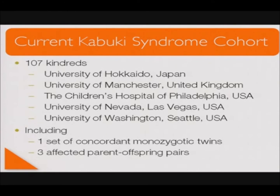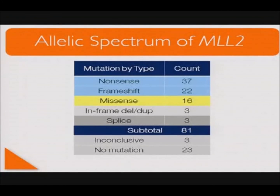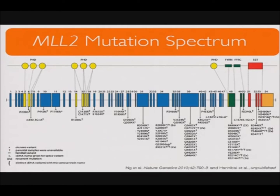Our current cohort includes one set of concordant monozygotic twins and three affected parent-offspring pairs. A summary of the types of heterozygous mutations identified in MLL2 from the cohort is displayed here. This slide shows a diagrammatic representation of where these mutations occurred within the MLL2 gene. At the top, the protein domains of the MLL2 protein are shown, such as the plant homeodomains (PHD) and the catalytic SET domain at the C-terminus. In the middle, the 54 exons of the MLL2 gene are shown, with identified mutations listed below each exon, predominantly in the three-prime end of the gene.